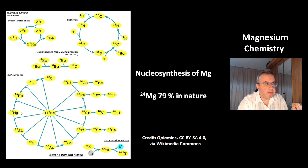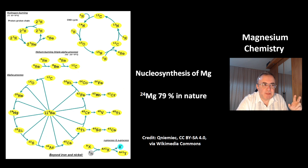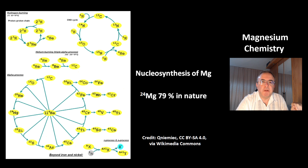Magnesium is here. It's a direct product of the second most abundant element, helium. That's why 79% of the magnesium in nature is magnesium-24.